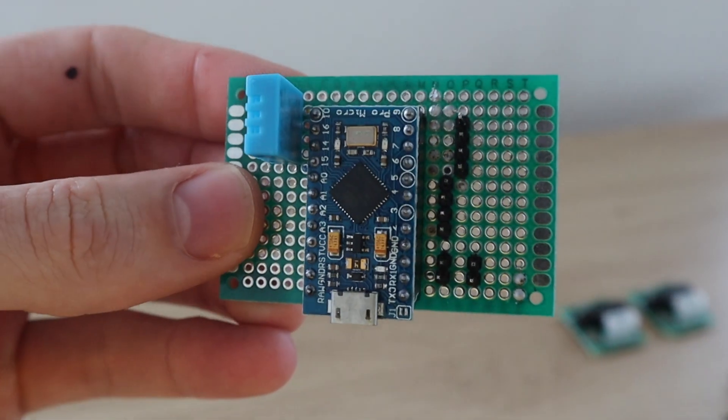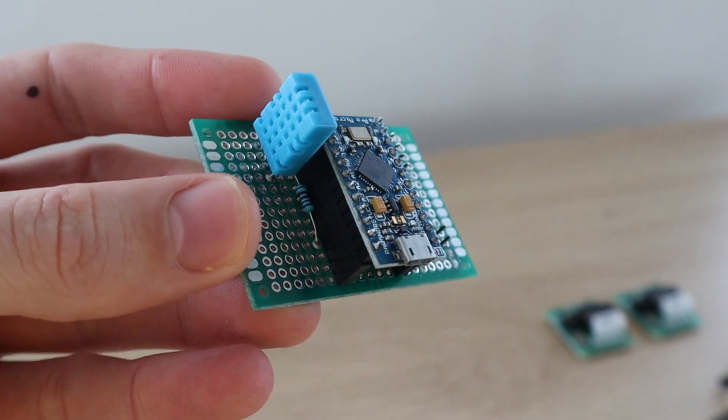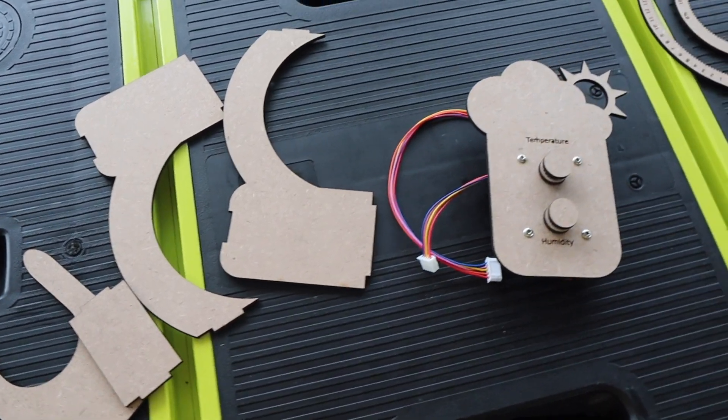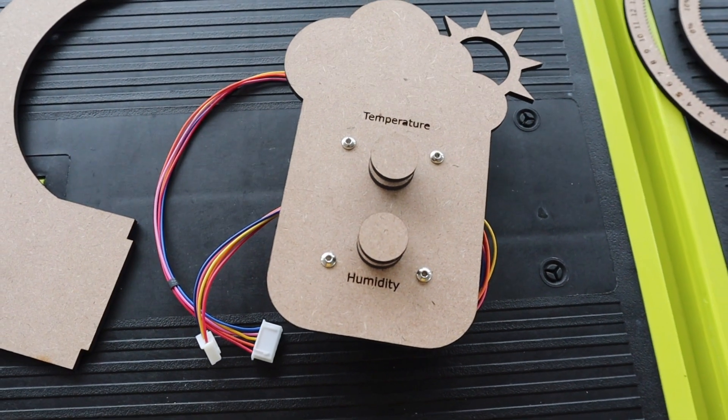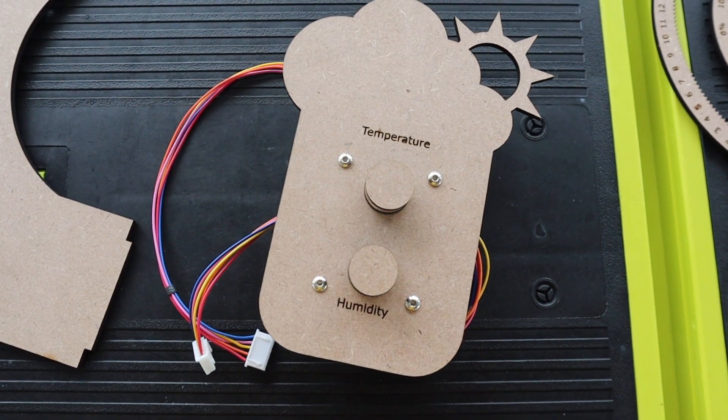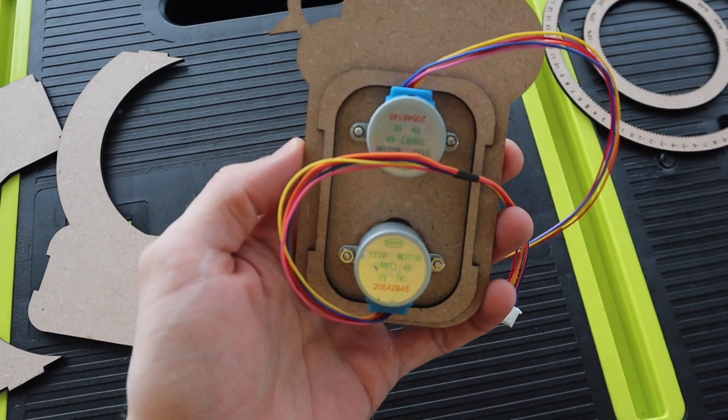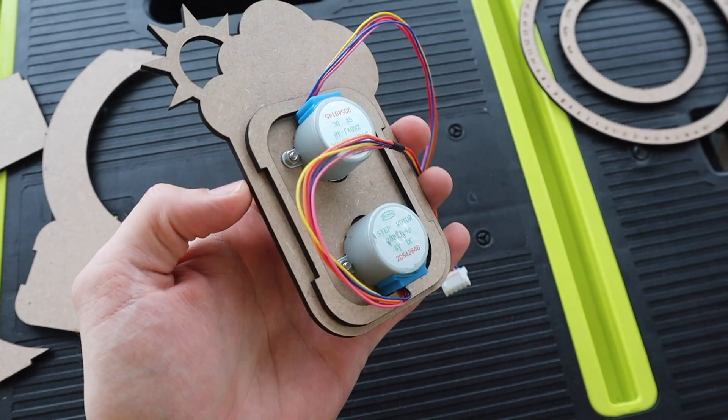Now let's install the electronics and finish off the assembly of the weather station. You can see the support stand plate in place behind the front plate here.